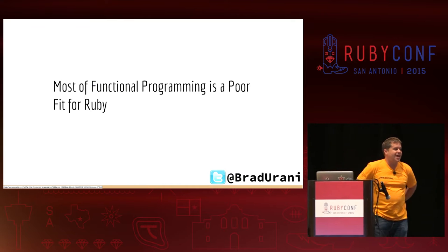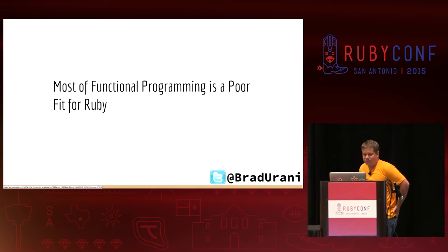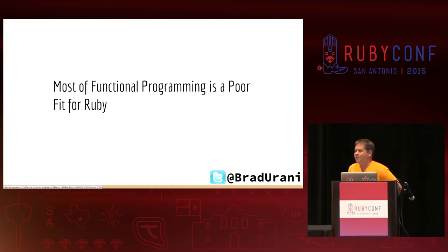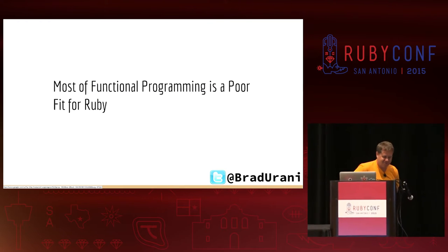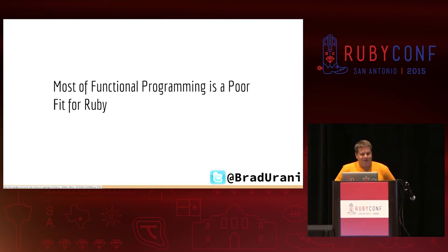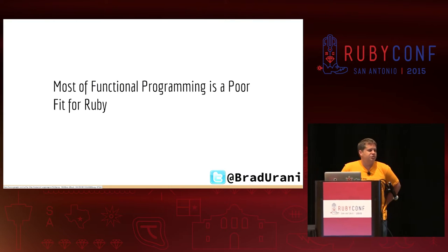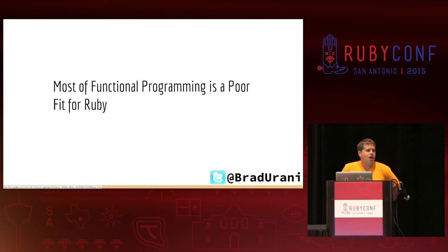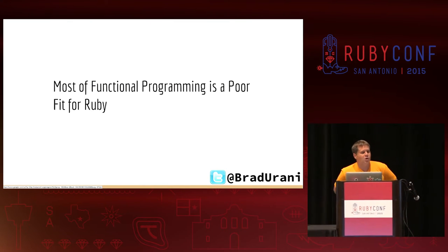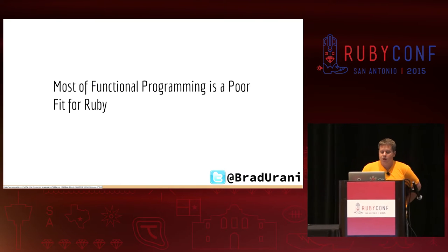The truth is most of functional programming is a poor fit for Ruby. Ruby is an object-oriented language, and I have tried to do pure functional programming in Ruby — you can do it, but I don't really recommend it, at least not in production. But these immutable data structures I thought were really interesting because they are a piece we can take that I think has some really interesting use cases, and are just a really neat topic with some cool aha moments in them.